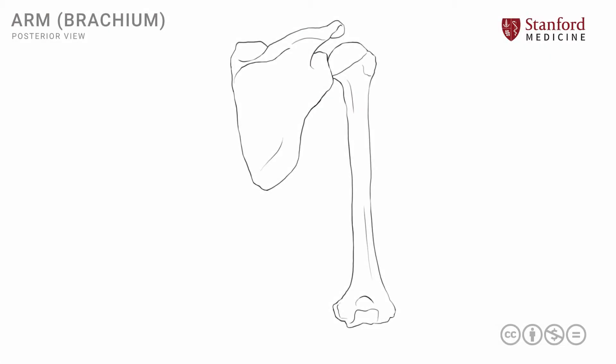In this lesson, we will review the key structures in the posterior arm, including the muscles and the neurovascular structures. Let's start with a simple line drawing of the posterior part of the arm, and note the orientation here. This is the medial side, and this is the lateral side. We're looking at the posterior side of the scapula and the posterior side of the humerus.